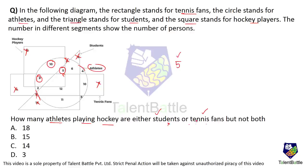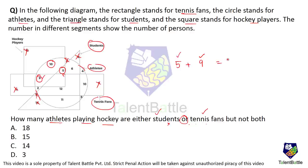For tennis fans, the rectangle contains 9. Since 9 is not inside the triangle, it is not a student — so 9 is allowed as it satisfies either-or. The 10 is not part of students and not part of tennis fans, so we cannot use that. Therefore the answer is 5 plus 9, which is 14 — option C.